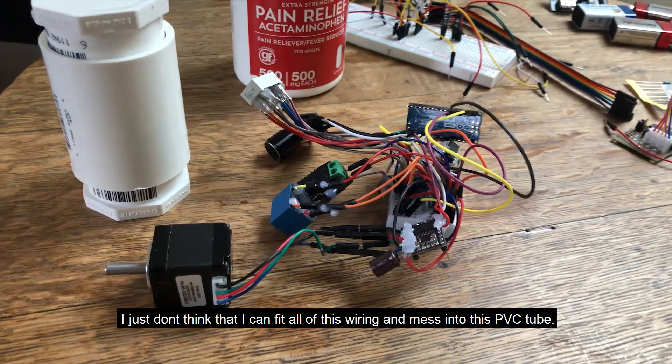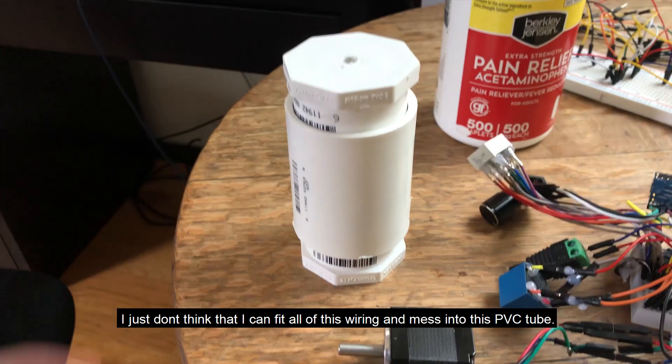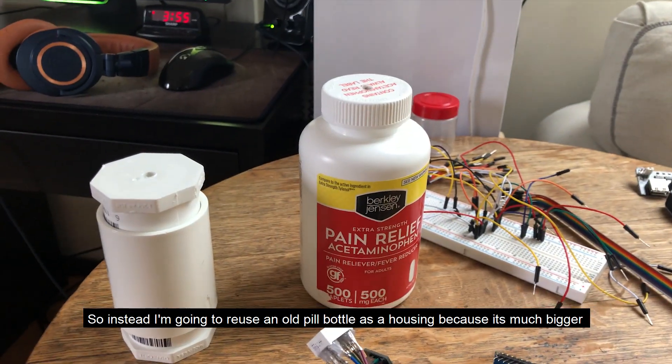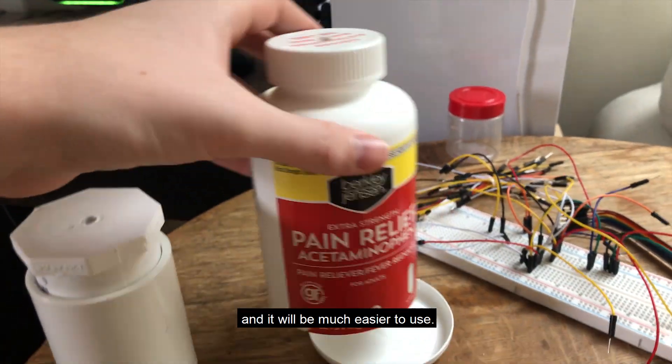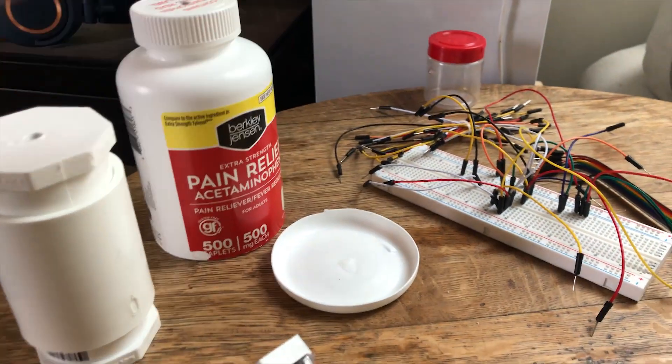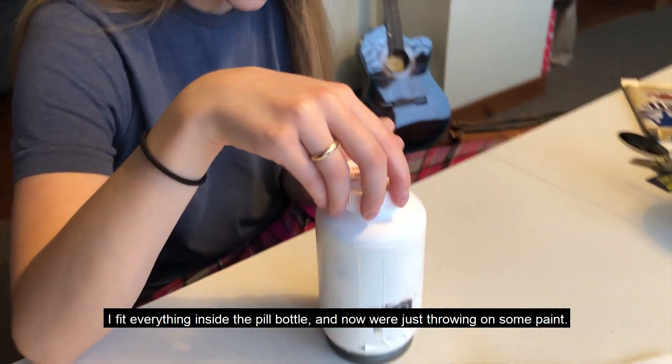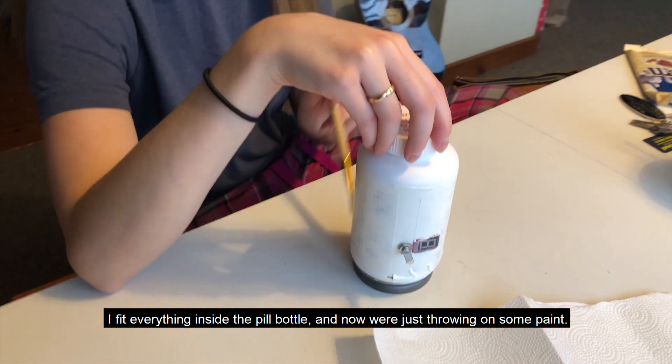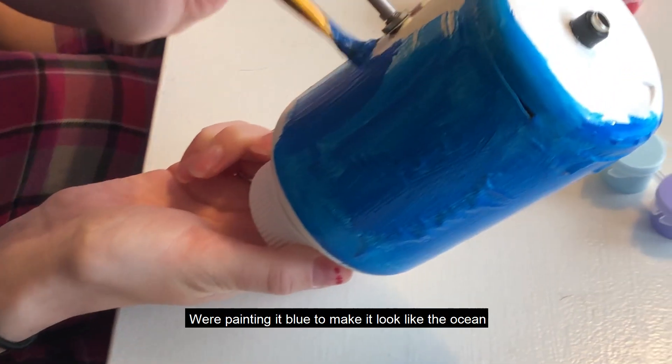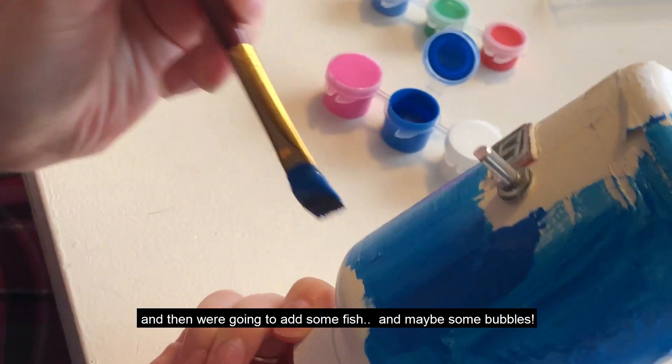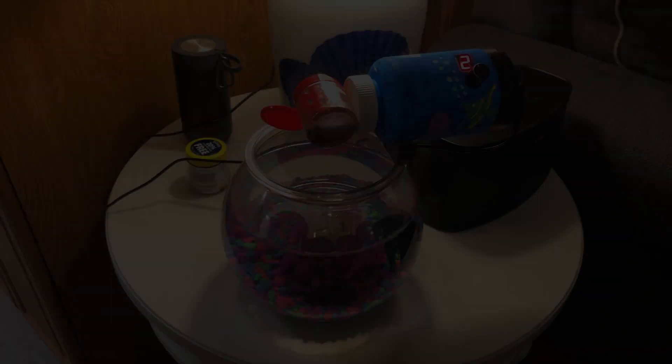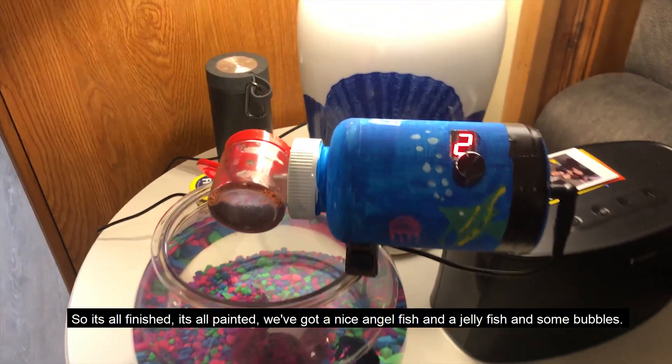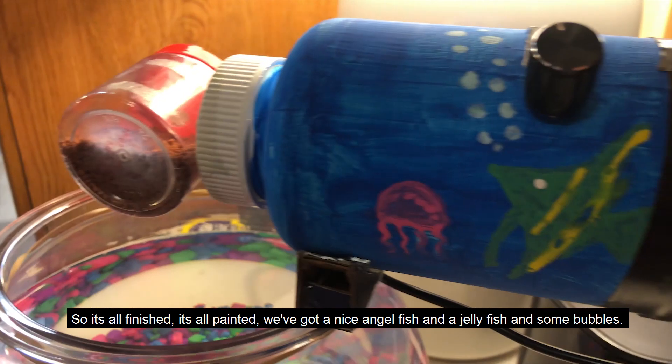Instead, I'm going to reuse an old pill bottle as a housing because it's much bigger and it'll be much easier to use. I fit everything inside the pill bottle and now we're just throwing on some paint. We're painting it blue to make it look like the ocean, and then we're going to add some fish, maybe some bubbles. It's all finished, it's all painted. We got a nice angel fish and a jellyfish and some bubbles.